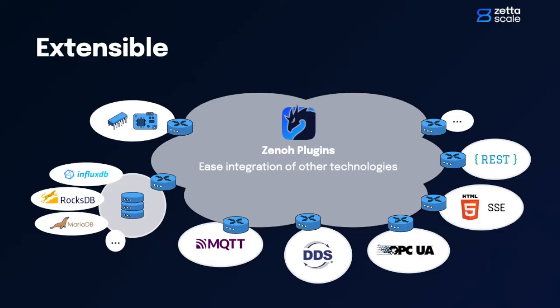Zeno has an extensible architecture. It has a rich set of storage plugins including InfluxDB, RocksDB, MediaDB, File System, and Main Memory. It has connectors to existing protocols like MQTT, DDS, and so on and so forth, and has native support for web technologies.